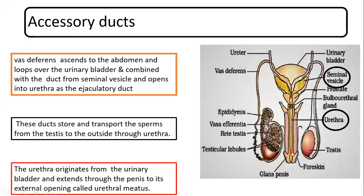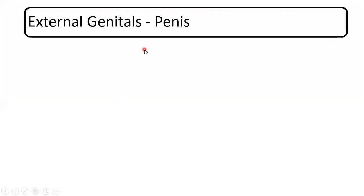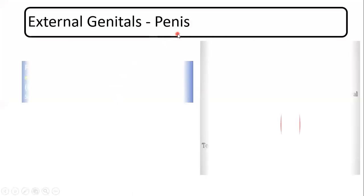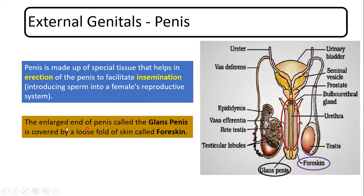The only external genital present in the male reproductive system is the penis. The penis has two functions: it is made up of special tissue required for erection, and the second function is insemination — the process of introducing sperms into the female reproductive system. The enlarged end of the penis visible from outside is known as the glans penis, and it is covered by a loose fold of skin named the foreskin.